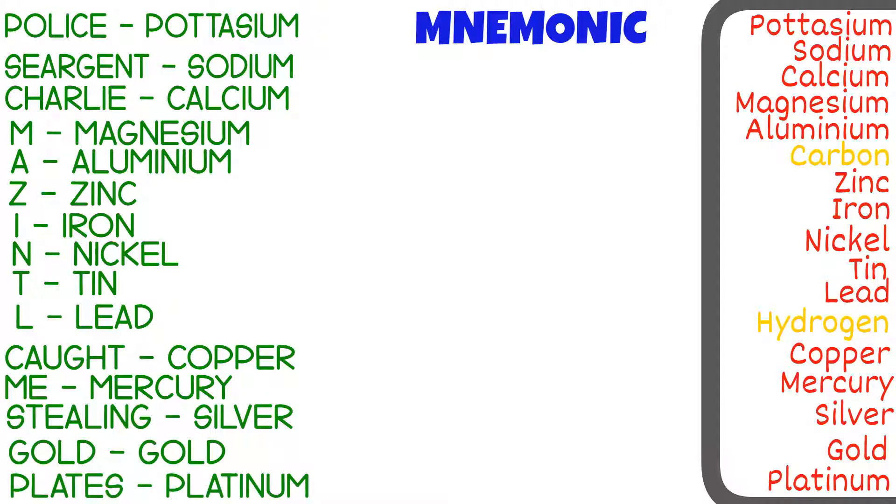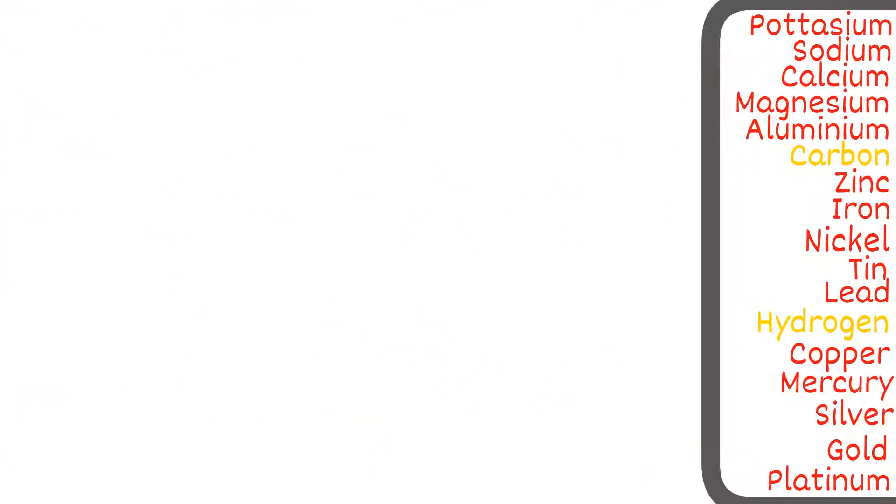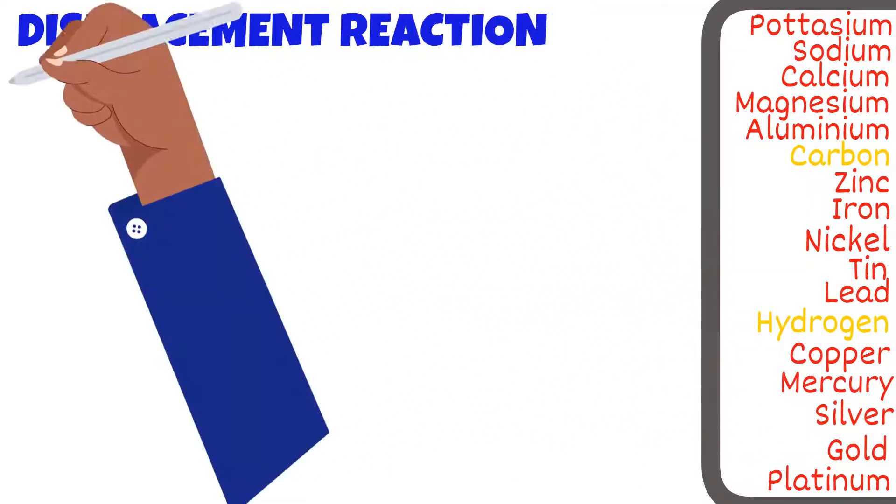However, this does not include carbon and hydrogen. Just remember carbon is above zinc and hydrogen is above copper. You also might be wondering why they're not included in the mnemonic. This is because carbon and hydrogen are the only non-metals in the reactivity series of metals.